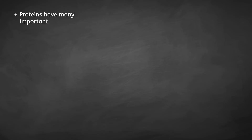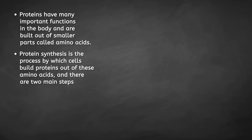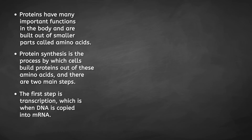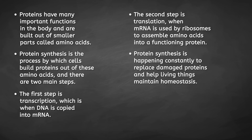So next time you lose some hair to the shower drain or clip your nails, think about all of the trips RNA had to make in your cells to make those protein structures possible. We've now covered the basics of protein synthesis. We've learned that proteins have many important functions in the body and are built out of smaller parts called amino acids. Protein synthesis is the process by which cells build proteins out of these amino acids, with two main steps: transcription, when DNA is copied into mRNA, and translation, when mRNA is used by ribosomes to assemble amino acids into a functioning protein. Protein synthesis is happening constantly to replace damaged proteins and help living things maintain homeostasis.